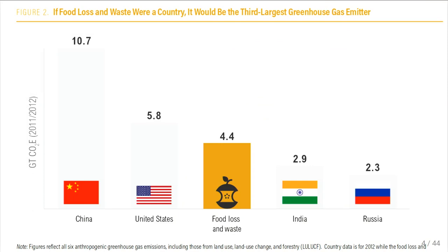The UN calculated that if food waste were represented as a country, it would be the third largest emitter of greenhouse gases behind China and the United States. It's not just greenhouse gas emissions — a quarter of freshwater consumption is directed to food that's eventually wasted, and land the size of China and the EU combined is what it would take to grow this food. As economic development improves, we actually end up with more consumer waste, wasted at a more wasteful stage of the supply chain.